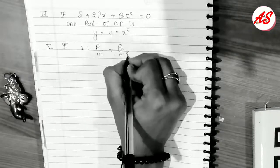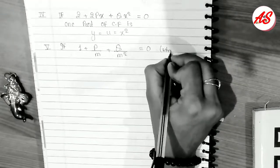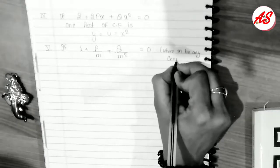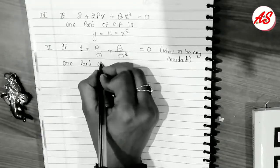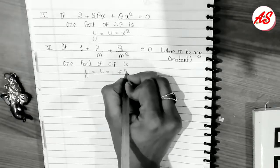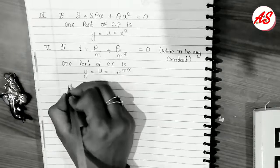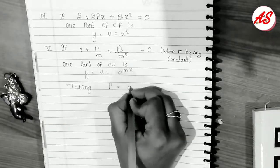The fifth method: if 1 + P/m + Q/m² = 0, where m is any constant, then one part of the CF is y = u = e^(mx).